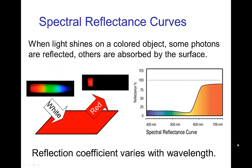Subtractive color. When light shines on a colored object, some of the light gets reflected and some gets absorbed. For a colored object, that reflection strongly depends on the various wavelengths of the light. White light has photons of all wavelengths, and if that white light is shining on an object we see as red, we see it as red because most of the photons are absorbed except for those with wavelengths in the range of red.